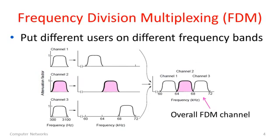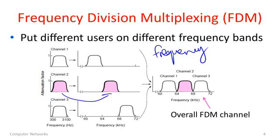In frequency division multiplexing, the users share the channel by transmitting simultaneously on different frequency bands. This picture shows the way the channel is divided in frequency. Each user has about the same amount of bandwidth to send — the middle user's bandwidth profile is shown in pink. To share using FDM, we shift the frequency band on which the user is transmitting to a different portion of the overall channel. The width of the frequency band limits the data rate the user can send.